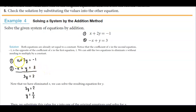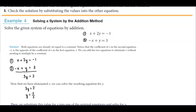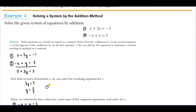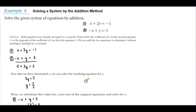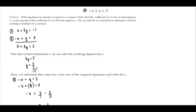So we can add the two equations to eliminate x without needing to multiply by a constant. Here we have our two equations, and when we add them together, x minus x gives you 0, and 0 plus 3y equals 2. Now that we have eliminated x, we can solve the resulting equation for y. To solve for y, we divide both sides by 3, and we get y equals 2 thirds.